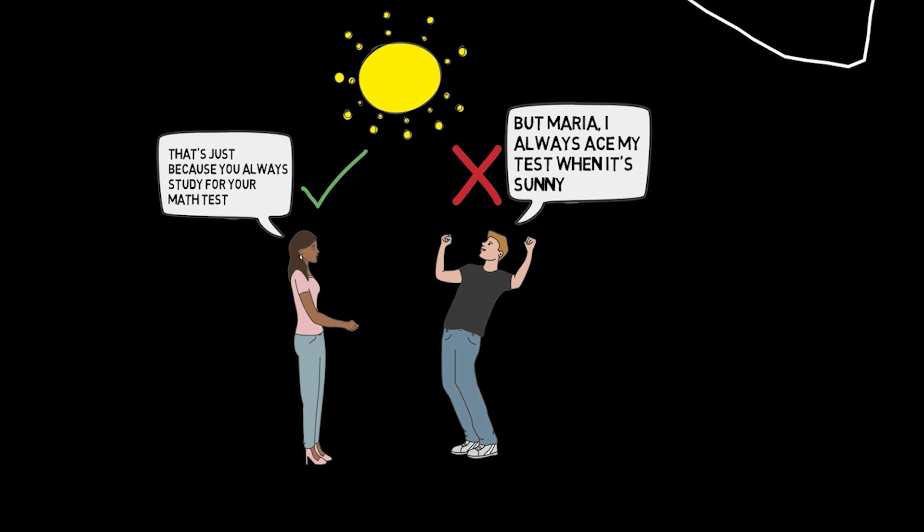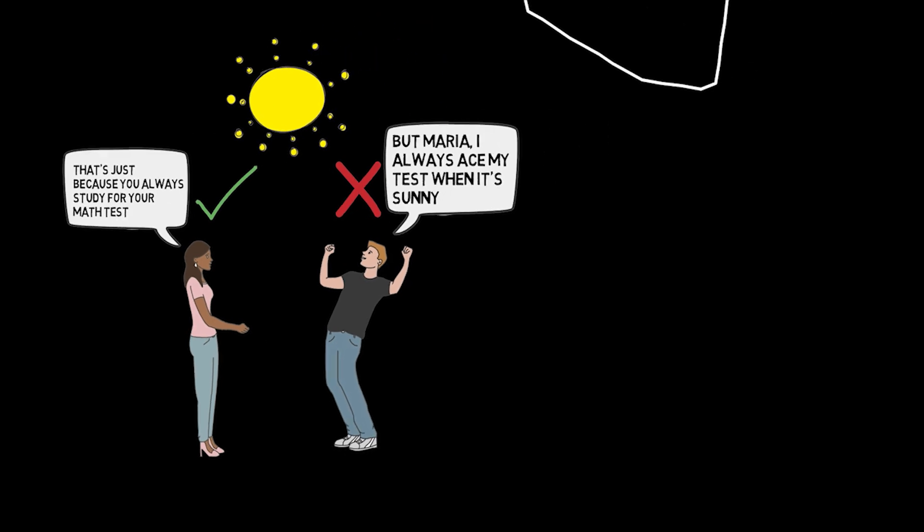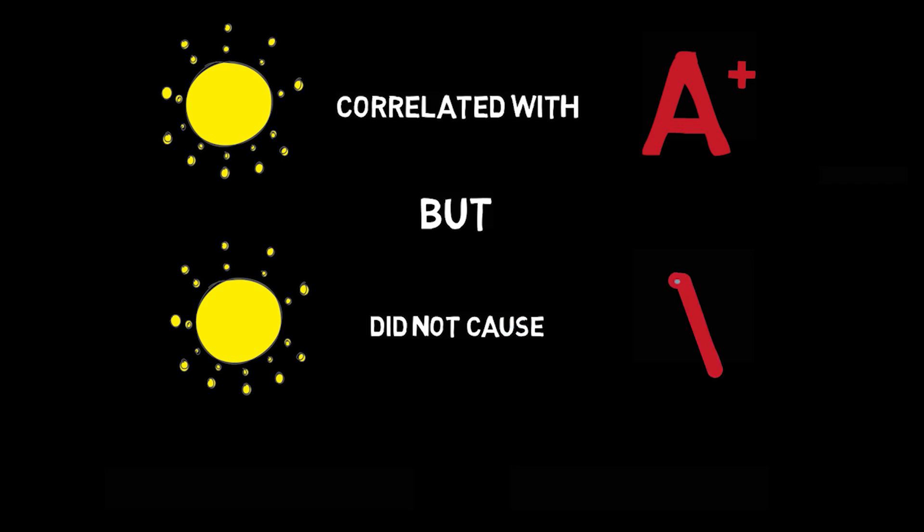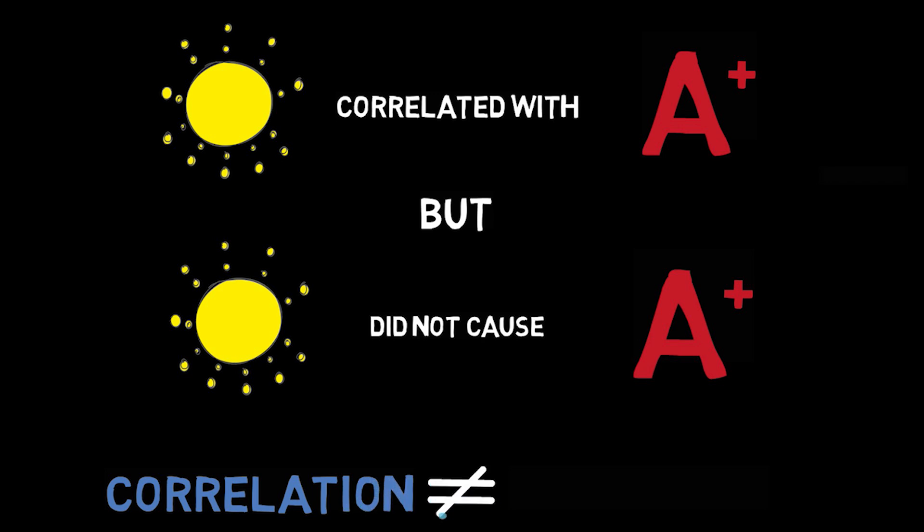Maria's correct. Andy's making a mistake. The sunniness doesn't cause Andy to ace his test. The two events, the sunniness and Andy acing his test, occur together without one causing the other. In other words, the two events are correlated in some way, but there's no causal relation between them. Andy's reasoning here is fallacious. Simply because two events are correlated does not mean that one caused the other. This conflation of correlation and causation is what we will talk about in this video.